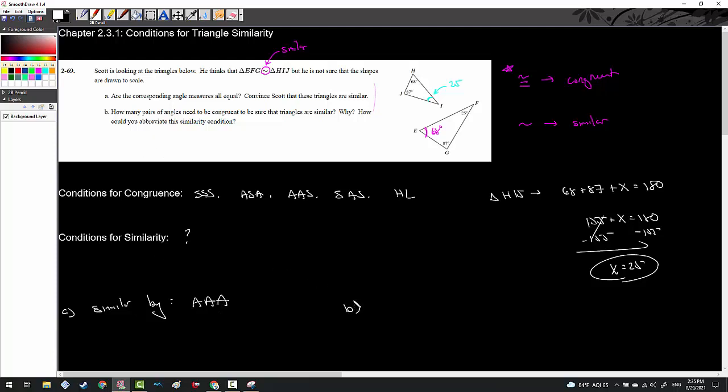Part B asks the better question: how many pairs of angles need to be congruent to be sure that the triangles are similar? Why and how could you abbreviate this similarity condition? So the fact that they're asking me to abbreviate angle, angle, angle means there might be a shorter way to do it. How many pairs of angles need to be congruent? Well, actually, it could very well be argued that all you need are two angles. You only need two pairs of congruent angles.